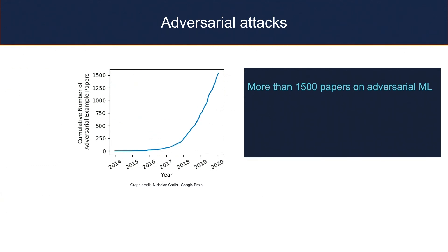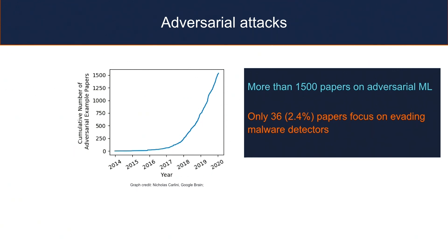Whenever we talk about machine learning in security, we have to think about adversarial attacks, because we always have an active adversary trying to evade our system. Adversarial attacks is one of the most researched areas in machine learning and security — there are more than 1,500 papers on adversarial machine learning since 2014. Many are also defense papers, but defenses often get broken before they are published. We wanted to see whether these papers help us understand security: only 36 papers, just 2%, focused on evading actual malware detectors.